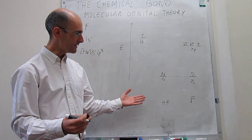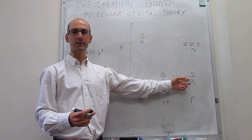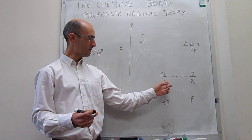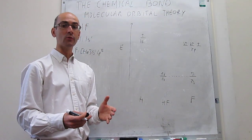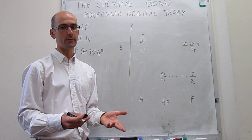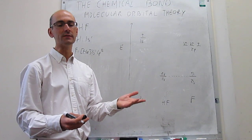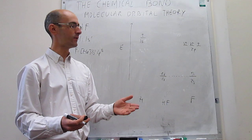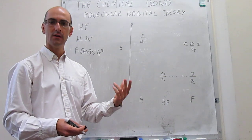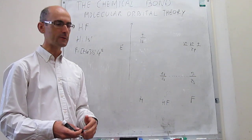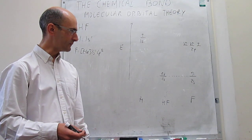Notice that because the 2s orbital doesn't interact with any other orbital, it goes to the molecular orbital diagram unchanged. That is what we call a non-bonding orbital — it isn't bonding or anti-bonding. It's neither of those; it's non-bonding. It's the same thing as an atomic orbital, but now it's in a molecule. That is the concept of a non-bonding orbital.